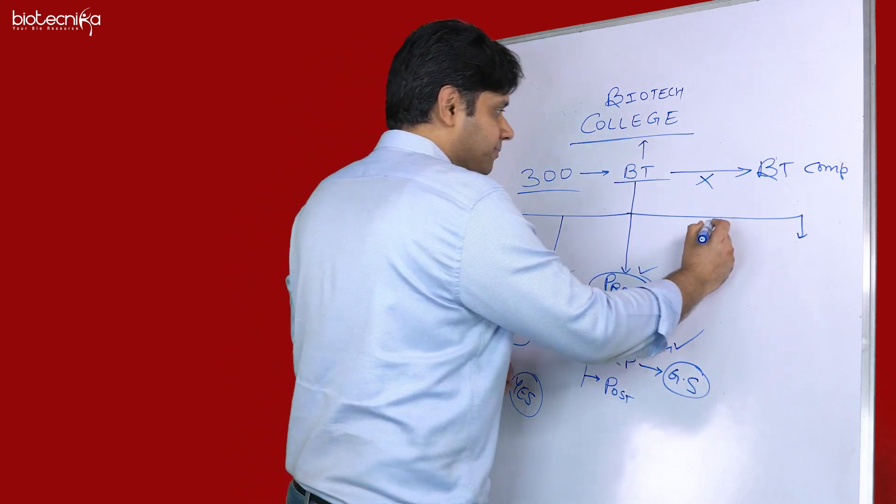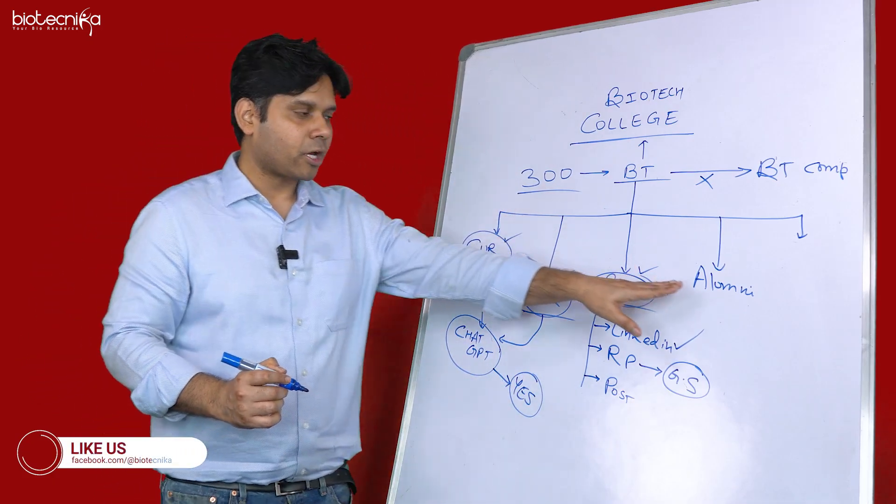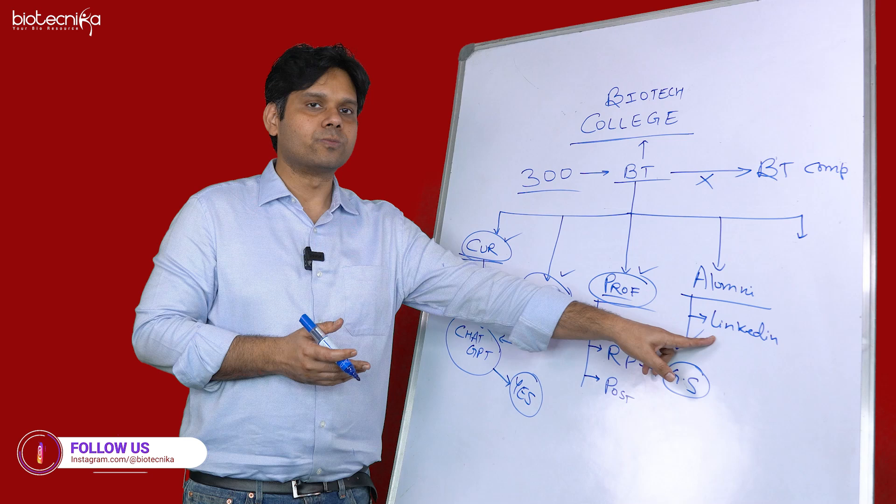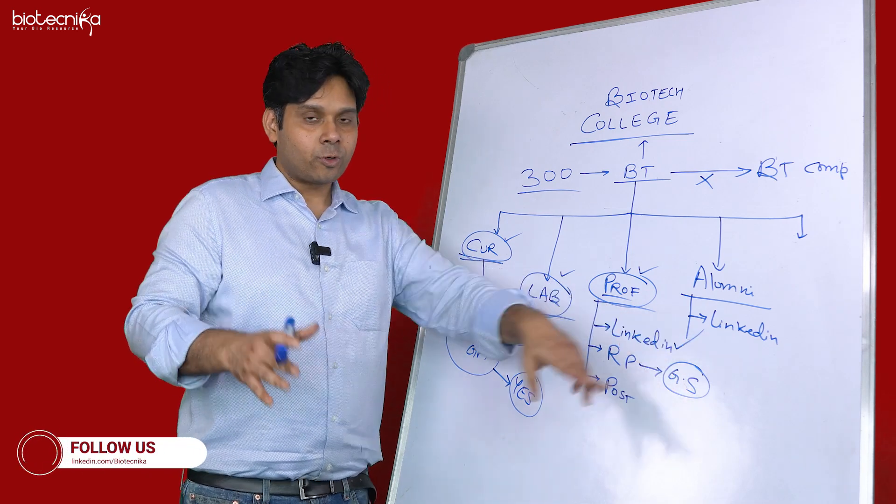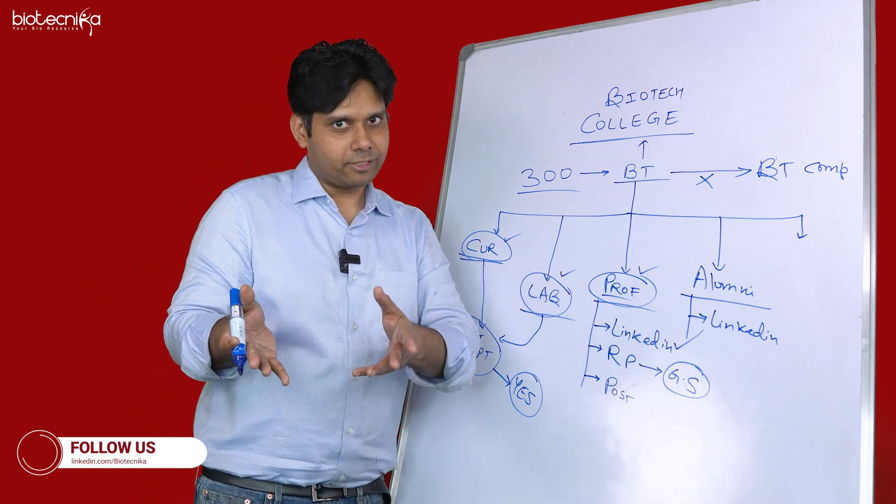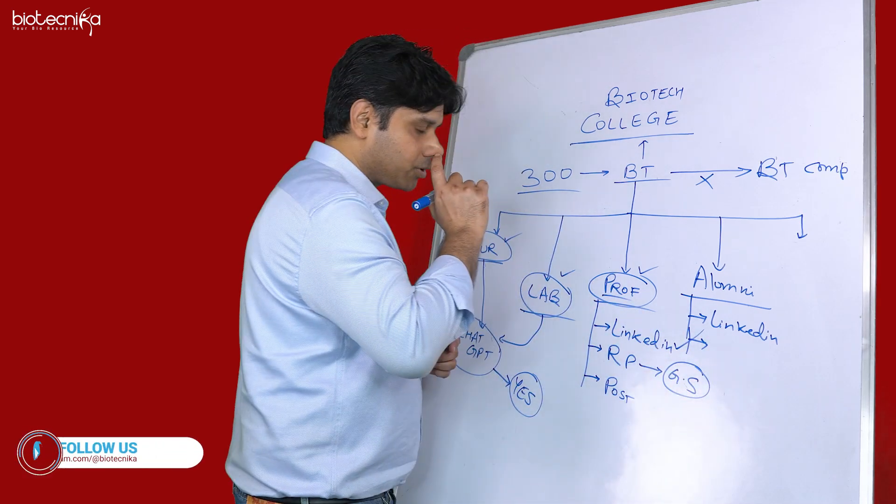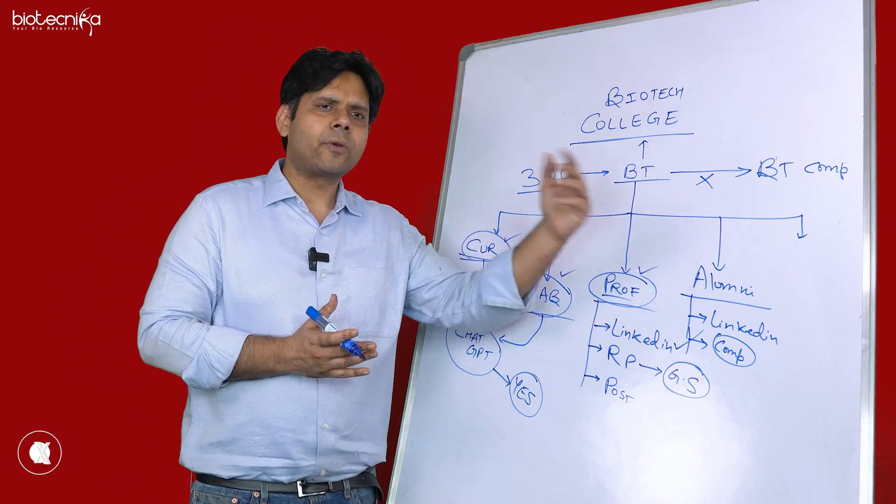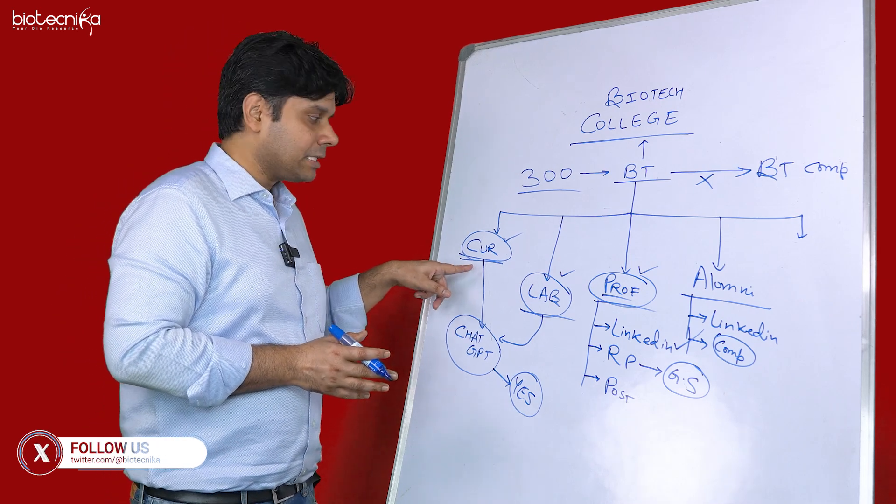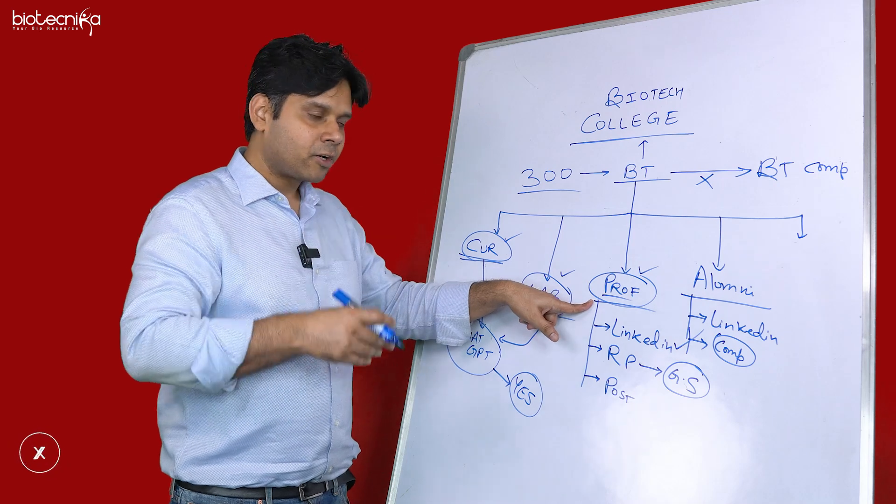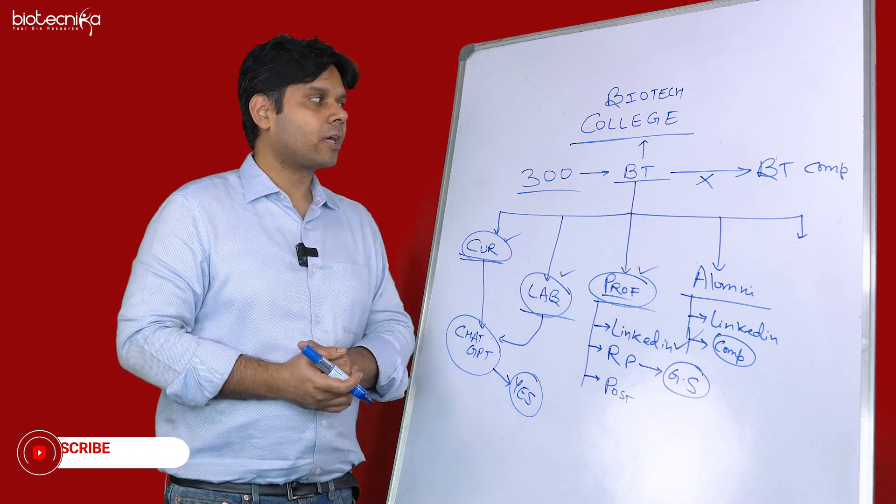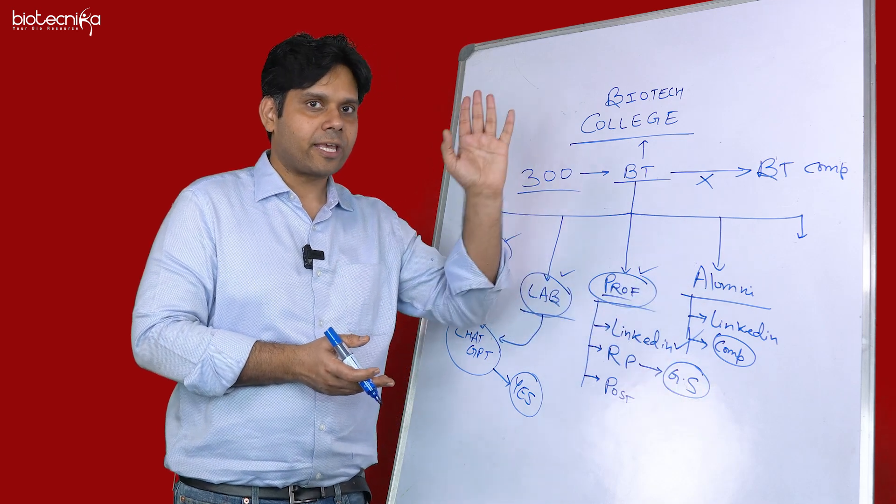The next thing is alumni. The admission officer will never tell you who got placed where. Go to LinkedIn and check who all have done the degree from this college. Contact this person on LinkedIn and ask how it is. They will tell you the truth. But don't buy whatever they say, because sometimes it can be fake profiles by the admission officer. Look at which company they are working for. Don't just look at one or two previous students - look at at least 10, 20, or 50 students to verify placement claims.